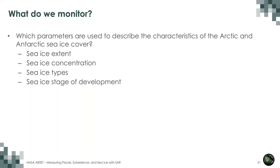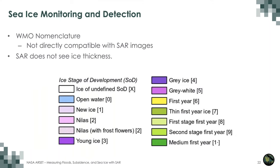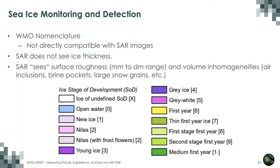How we monitor sea ice was not necessarily designed with radar in mind. A lot of terminology, such as the WMO nomenclature, was devised by people standing on the ice itself. SAR does not directly see ice thickness. Instead, SAR sees roughness — in the millimeter to decimeter range — and volume inhomogeneities such as air inclusions, brine pockets, and snow grain size. These SAR observations must then be related back to the WMO ice type classifications.